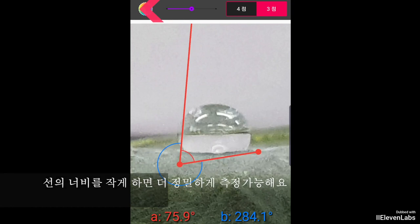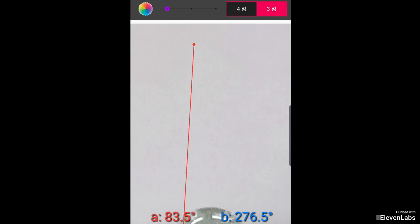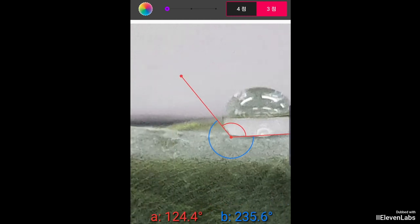The contact angle forms where the water droplet, air, and plant surface meet. To measure it, students should carefully adjust the line to touch the edge of the water droplet where it meets the surface to create a good tangent line at the interface of water, air, and the plant surface.